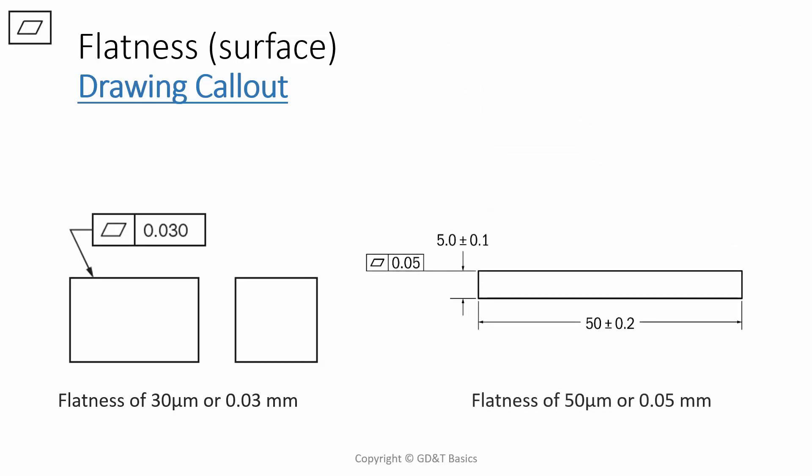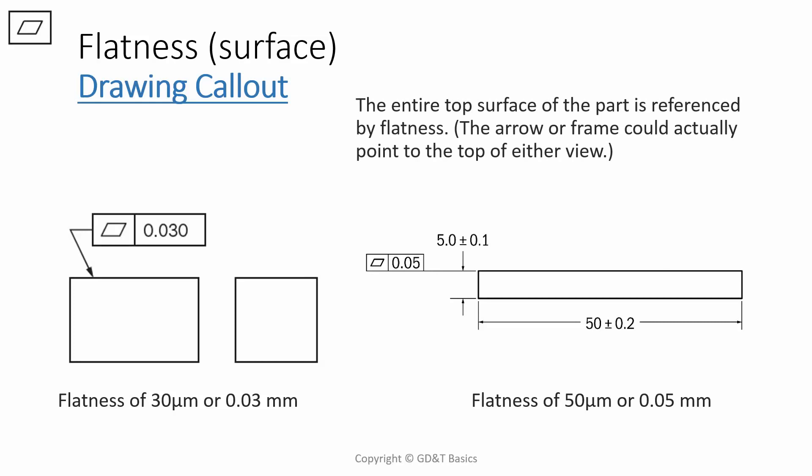Let's talk about how you call out flatness on a drawing. In this way, just like we discussed before, the feature control frame is pointing directly to the surface that you want to apply flatness to. You can either do this with a leader arrow or an extension line. This means that the entire top surface of the part is referenced by flatness. The arrow or frame could actually point to the top of either view in the picture to the left.